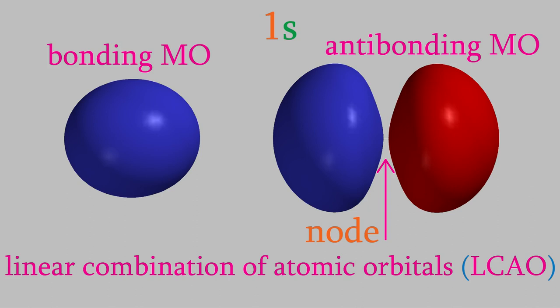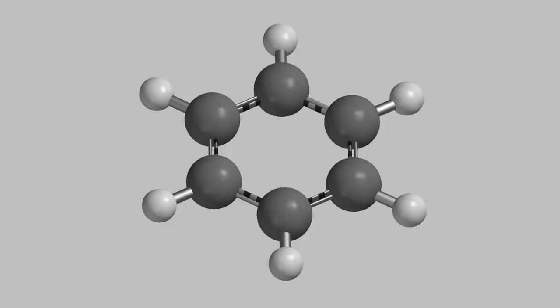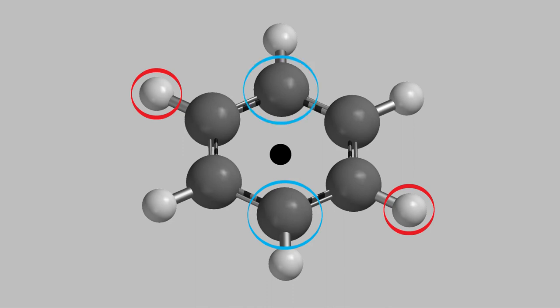Aside from telling whether the MO is bonding or antibonding, we can also describe them by their symmetry. From back in video 15, you might remember that we looked at different symmetry elements. One of them was a center of inversion. A molecule has a center of inversion if every atom in the molecule has an identical atom at the opposite end of the molecule relative to the molecule's center. For example, in a benzene molecule, the center of the molecule is here in the middle of the ring. Every atom in the molecule has a corresponding atom on the exact opposite side of the molecule — for example, this hydrogen atom has an equivalent hydrogen atom on the opposite side, and the same is true for each carbon atom.